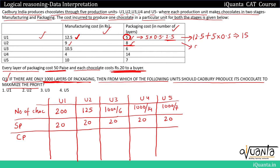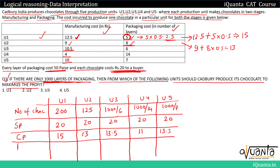Similarly, CP for U3 is 13.5 rupees, U4 is 11 rupees, and U5 is 13.5 rupees. Profit per chocolate: U1 = 20 − 15 = 5, U2 = 20 − 13 = 7, U3 = 20 − 13.5 = 6.5, U4 = 20 − 11 = 9, U5 = 20 − 13.5 = 6.5 rupees.